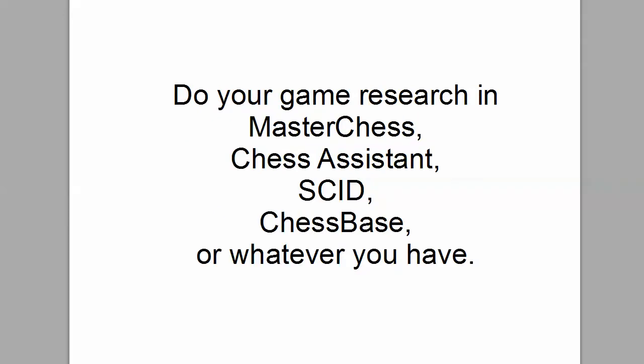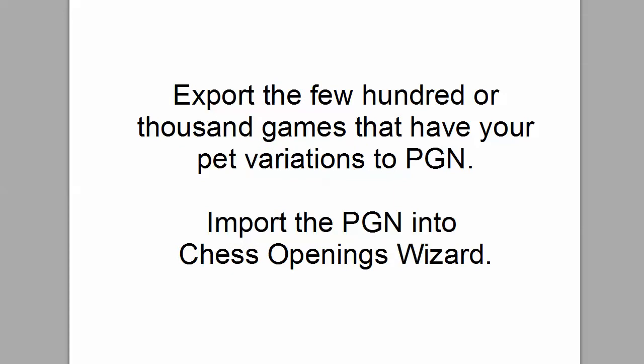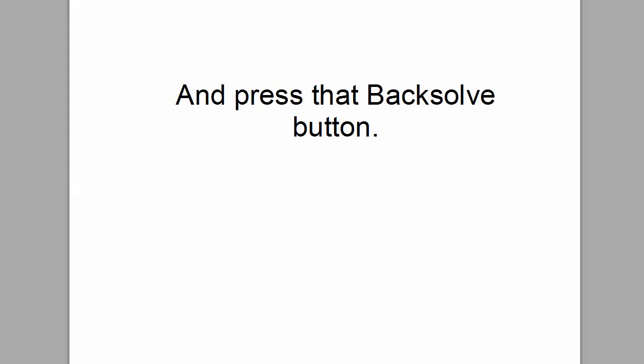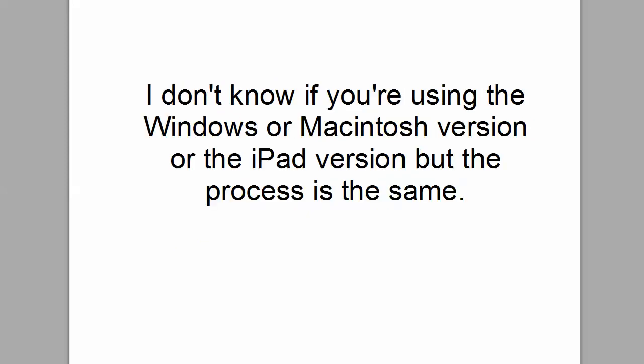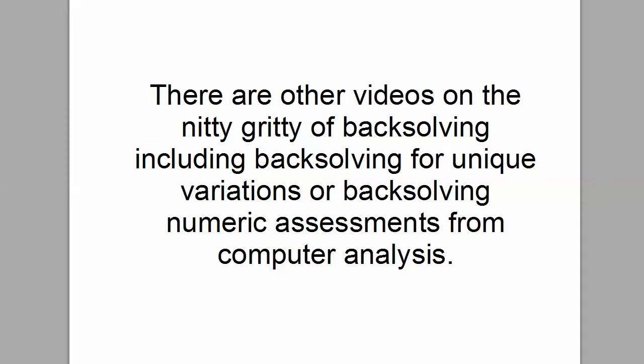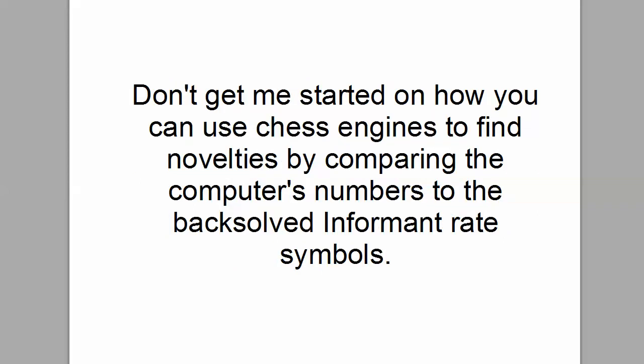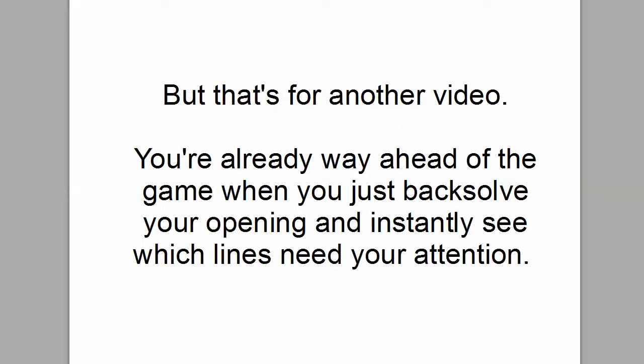You know the drill. Do your game research in Master Chess, Chess Assistant, Scid, Chess Base, or whatever you have. Export the few hundred or thousand games that have your pet variations to PGN. Import the PGN into Chess Openings Wizard, and press that backsolve button. Whether you're using the Windows, Macintosh, or iPad version, the process is the same. There are other videos on the nitty-gritty of backsolving, including backsolving for unique variations or backsolving numeric assessments from computer analysis. You can even use chess engines to find novelties by comparing the computer's numbers to the backsolving informant rate symbols — it is super cool, but that's for another video. You're already way ahead of the game when you just backsolve your opening, and you instantly see which lines need your attention.